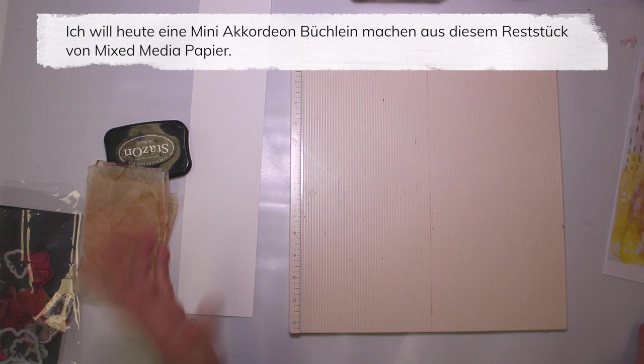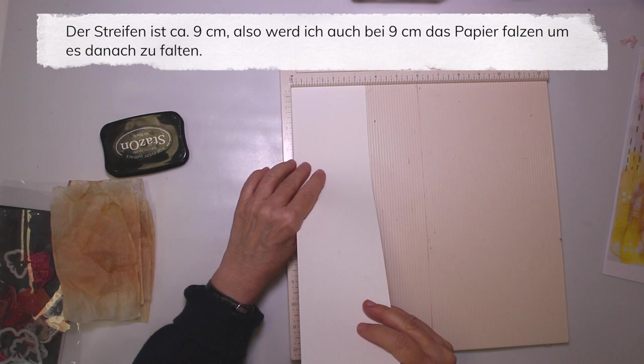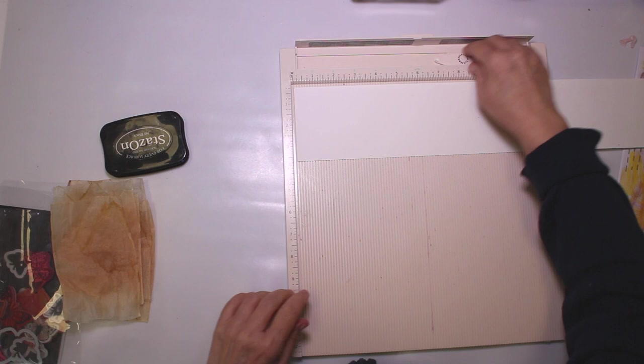And what I have planned, I have this leftover mixed media paper, and I thought I'm going to make a sort of mini book, accordion style. It is three and a half, so I'm going to score it at three and a half to make an accordion style.